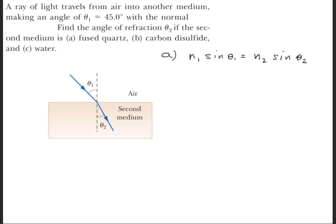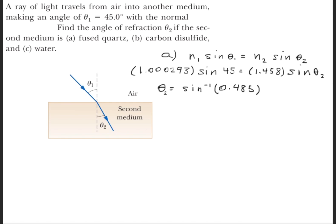We'll go ahead and plug in the values right here. For air, the index of refraction is 1.000293, and the index of refraction for fused quartz is 1.458. Next, we'll simply plug in the angles — we were given that theta 1 is 45 degrees.